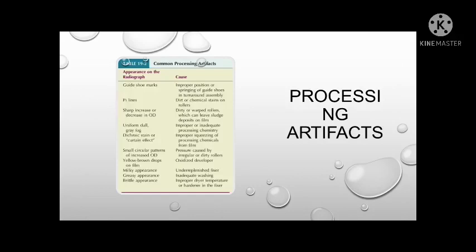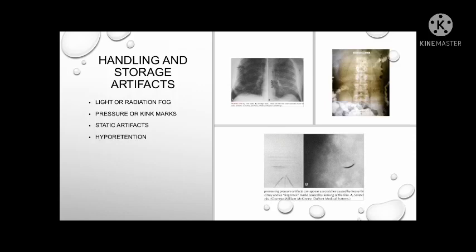Here is a summarized table for the common processing artifacts and their appearance on the radiograph — you can check Bushong for more detailed reading. Now let's proceed with the last category: handling and storage artifacts. These can be acquired from improper handling and unsafe storage of radiographic films. First, we have light or radiation fog, which appears as a streak-like pattern of increased optical density. This occurs when the film beam is not shielded adequately from radiation, there are light leaks on the container, or temperature and humidity inside the storage room is too high. Pressure marks occur when film is stacked too high, causing marks with increased optical density. Kink marks appear as fingernail marks from rough handling and cause scratches with increased optical density.